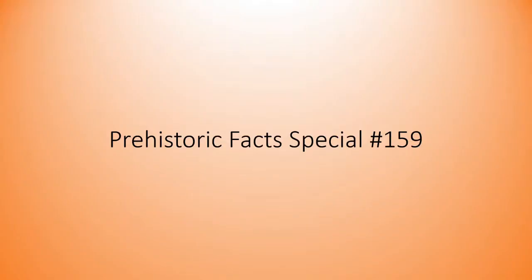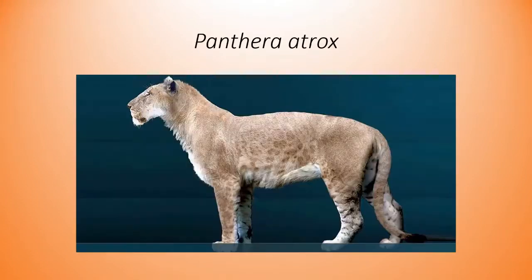Hello everyone, this is Daniel Chris from Prestar Facts. This is Prestar Facts special episode number 159. We're going to be talking about a prehistoric mammal predator — Panthera atrox. This is the Latin name of this animal, and this is a possibility of what Panthera atrox would have looked like. It's just a guess of what they probably looked like.